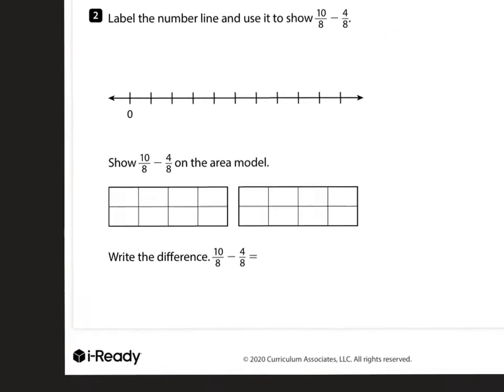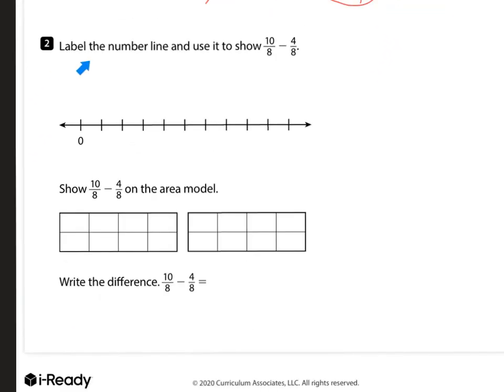Alright, let's head on to number 2. Label the number line and use it to show 10 eighths minus 4 eighths. So the first way to do it, easiest way and the quickest way, you know when adding or subtracting fractions, your denominator always stays the same. And you look at your numerators, 10 minus 4 will give me a difference of 6. 6 eighths is going to be your difference.